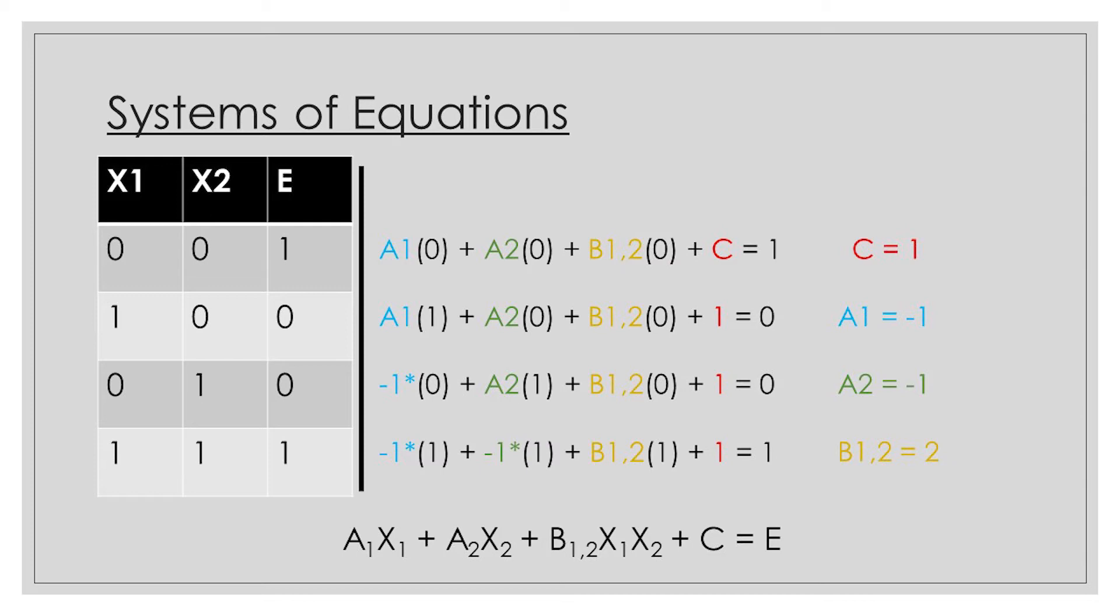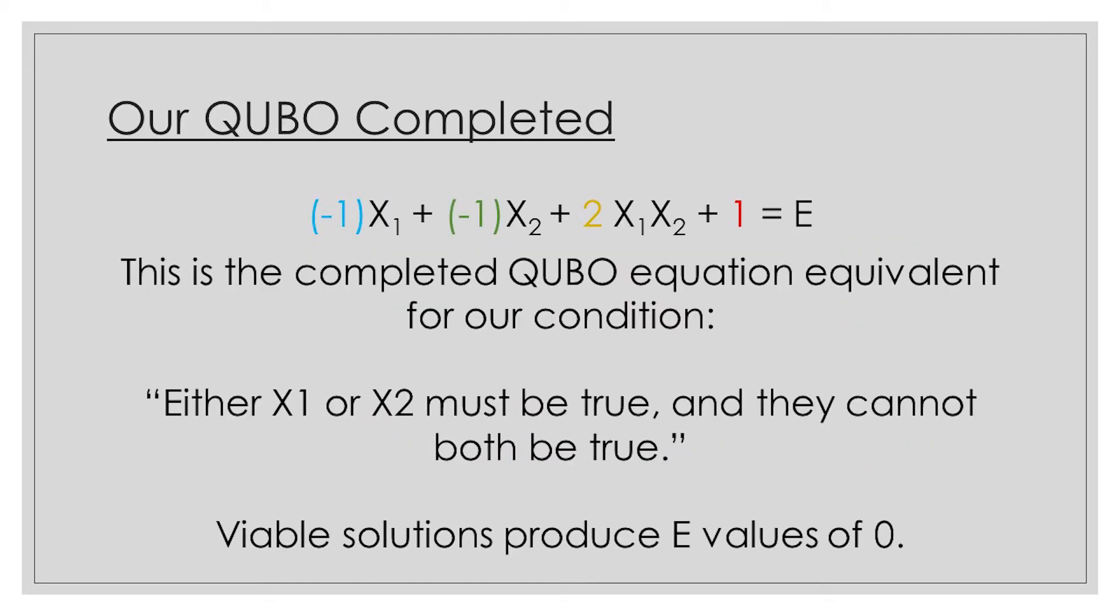Now all we need is the constant b1,2. Our final possibility uses all of the constants that we found in the previous equations. Both x1 and x2 are equal to 1, meaning that this is not a viable solution, and the energy level must be equal to 1. So we plug in all of our constants, and we have here our final incomplete iteration of our QUBO equation. Negative 1 plus negative 1 plus b1,2 plus 1 is equal to 1. This reduces to b1,2 is equal to 2. And there you have it, our completed QUBO equation for our constraint. We've essentially translated our English constraint of either x1 or x2 must be true at all times, and only one of them can be true, into a QUBO mathematical equivalent.